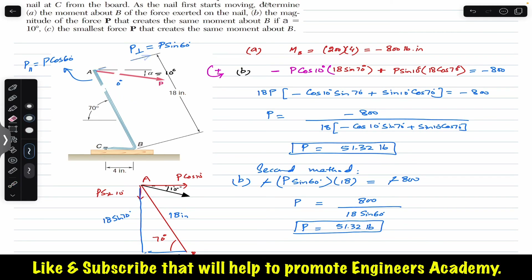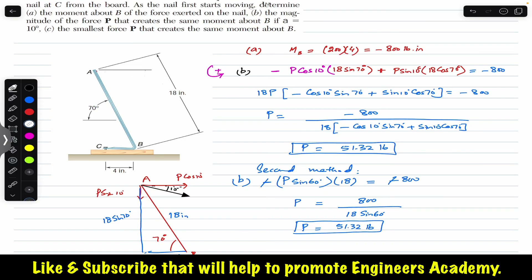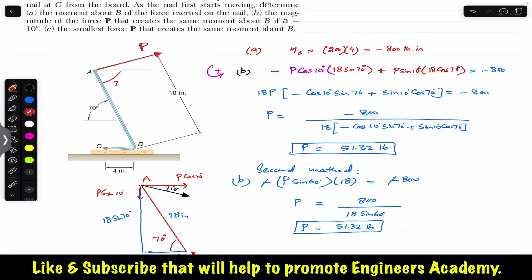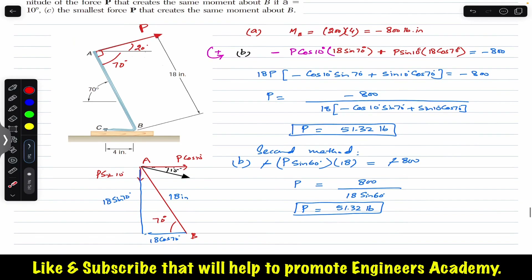For part C, we erase the previous force P and angle alpha. Since bar AB makes 70 degrees with the horizontal and the force P must be perpendicular to AB, the force P makes 20 degrees with the horizontal (since 90° − 70° = 20°).